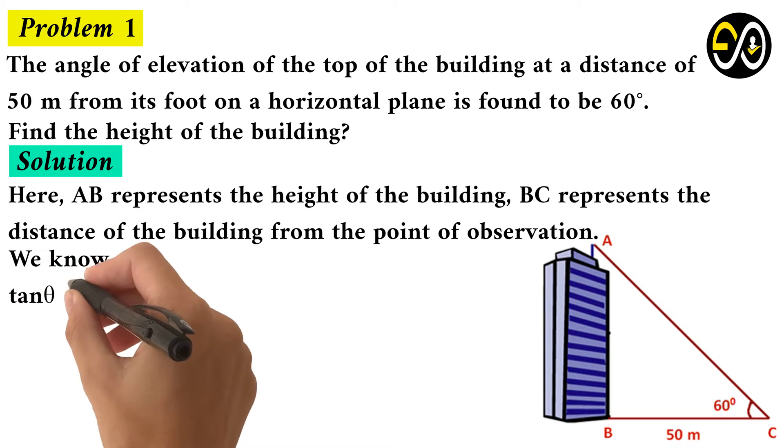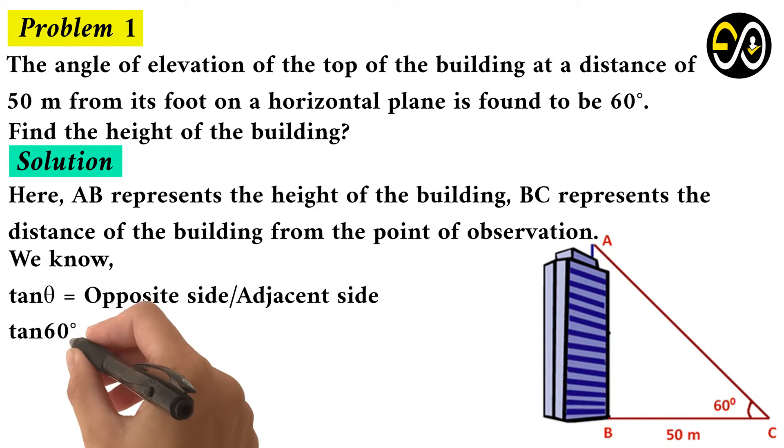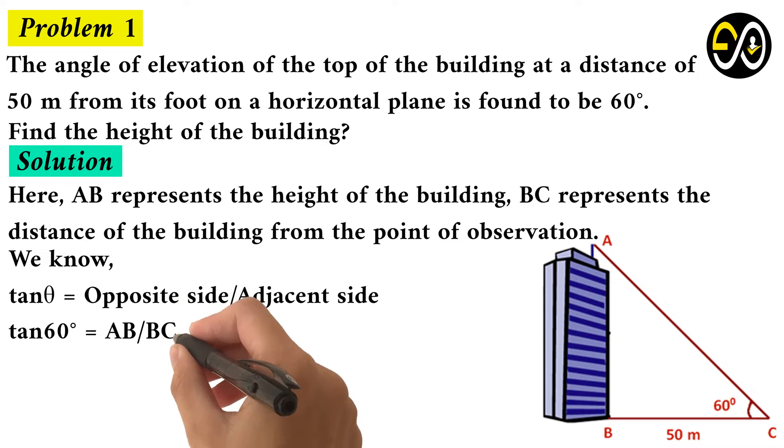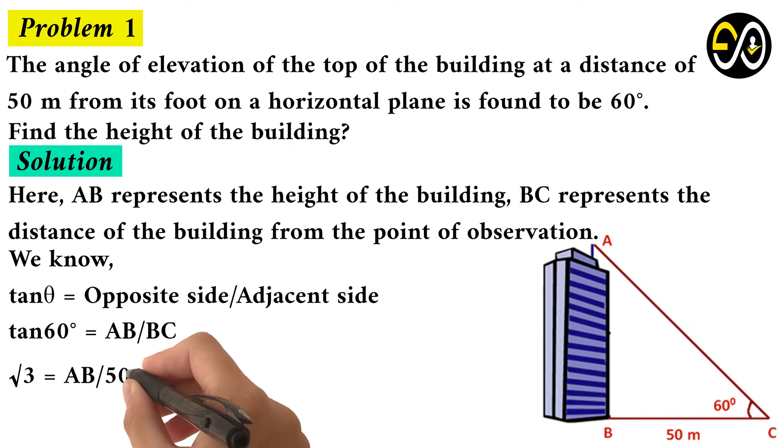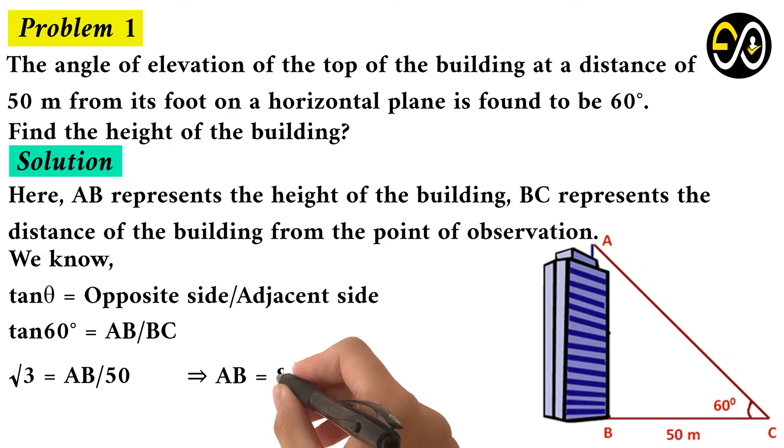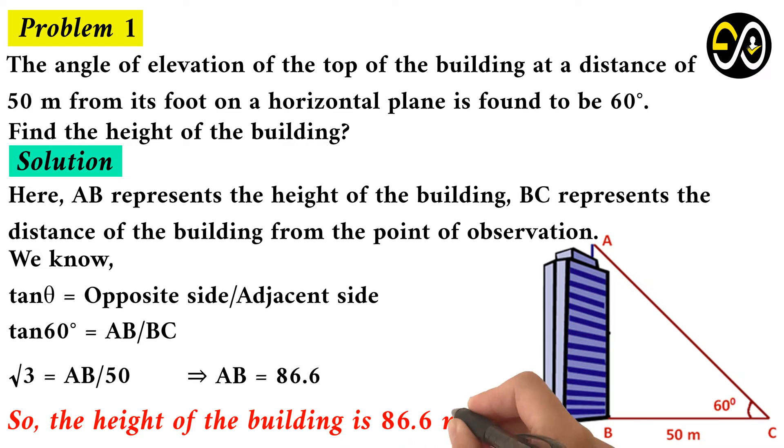We know tan theta equals opposite side over adjacent side. Tan 60 degrees equals AB over BC. Square root of 3 equals AB over 50. AB equals 86.6. So, the height of the building is 86.6 meters.